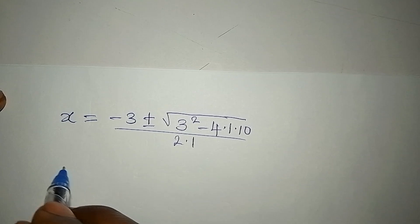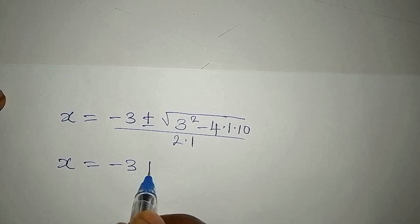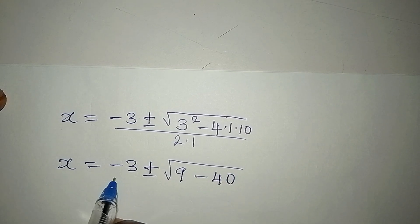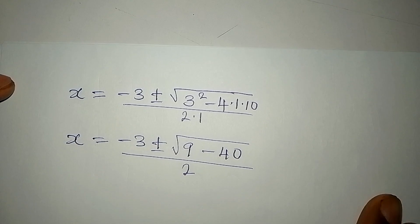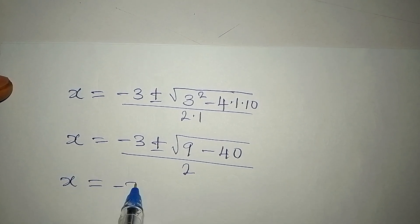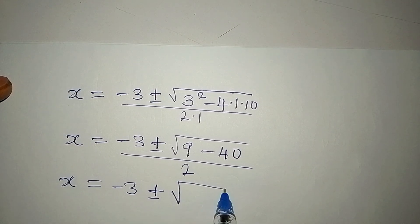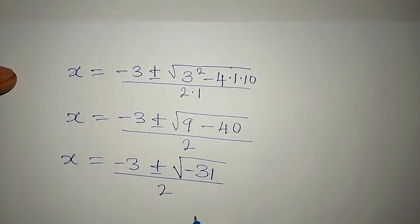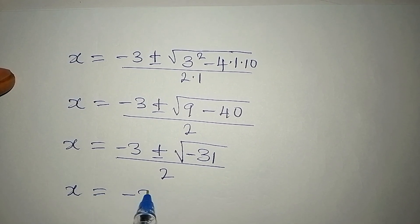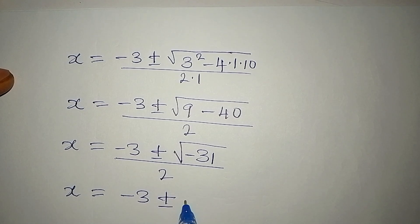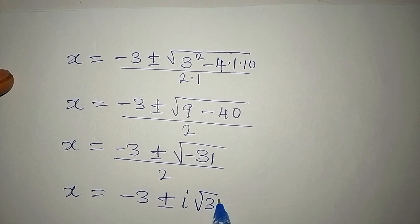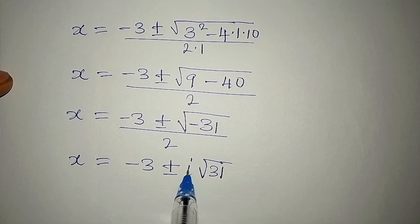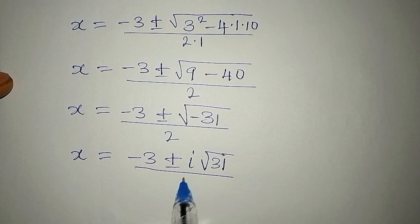So x equals minus 3 plus or minus square root of 9 minus 40, all over 2. That gives square root of negative 31. Because of this negative under the root, we introduce the imaginary constant i, so we have minus 3 plus or minus i√31, all over 2.